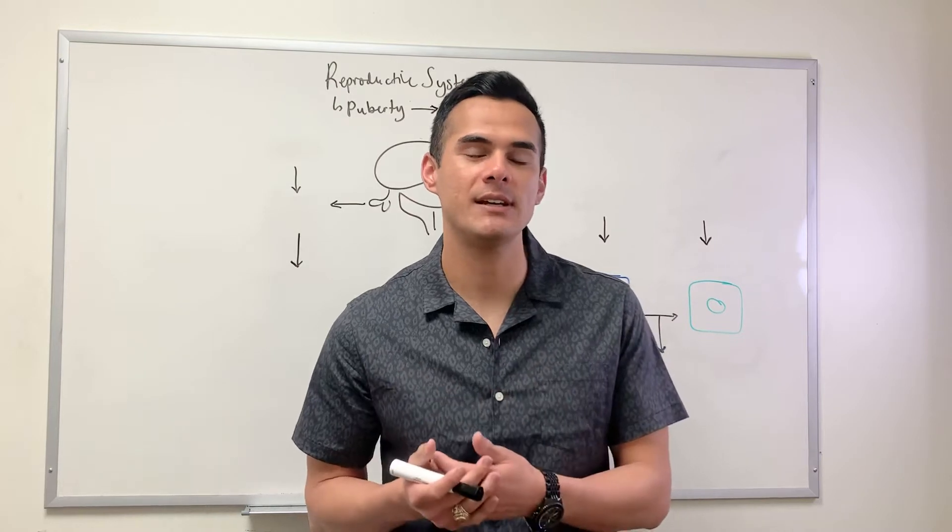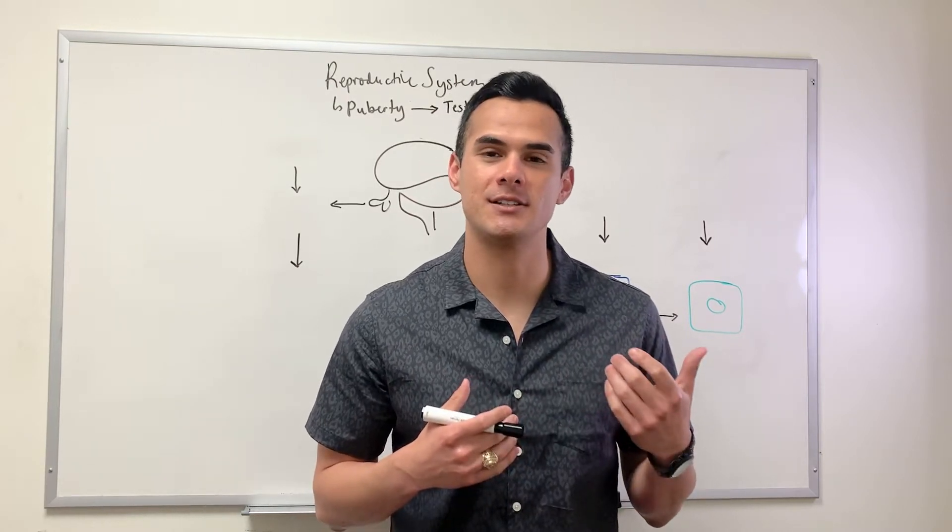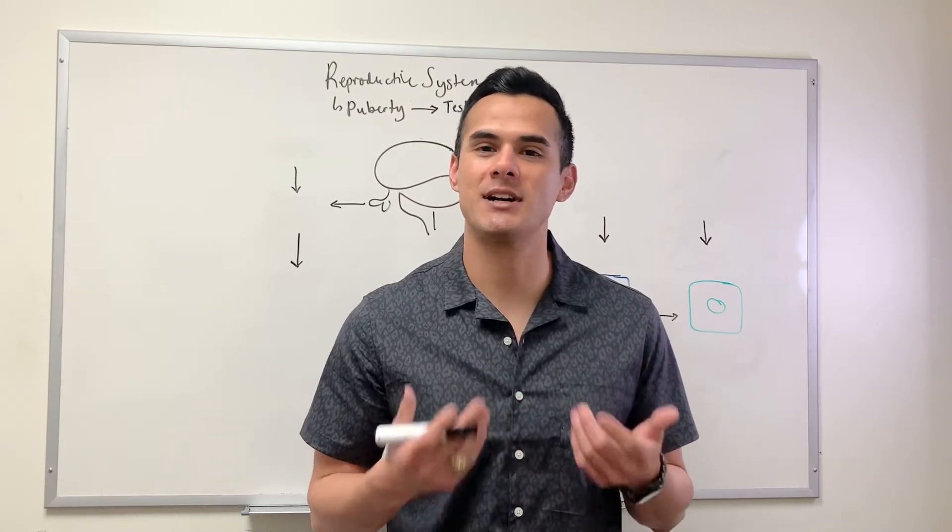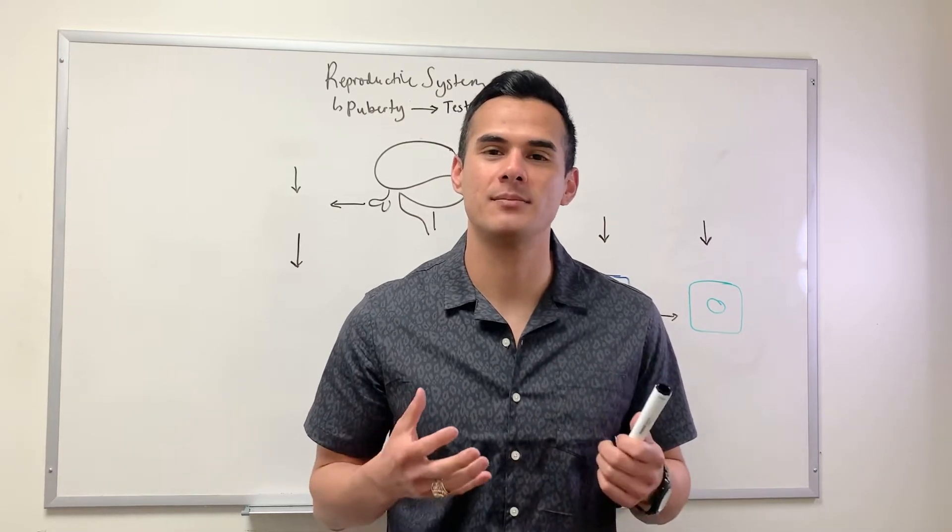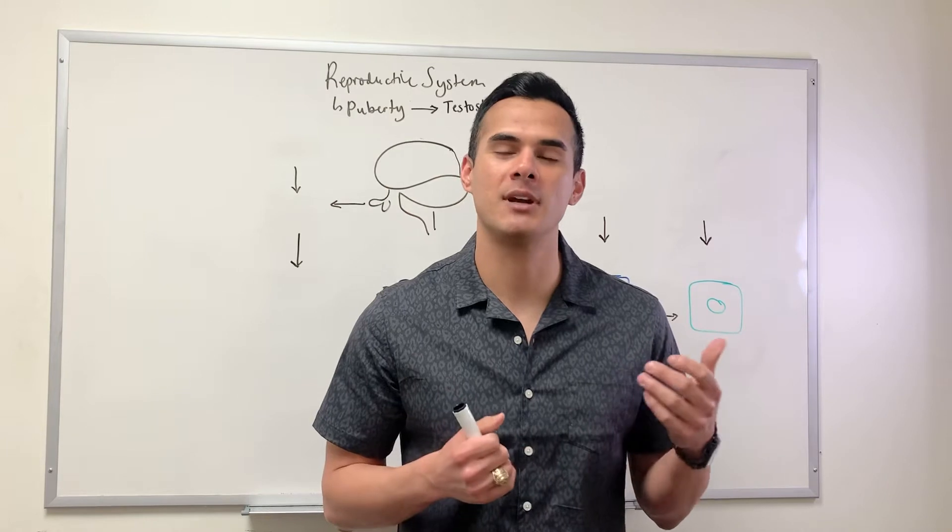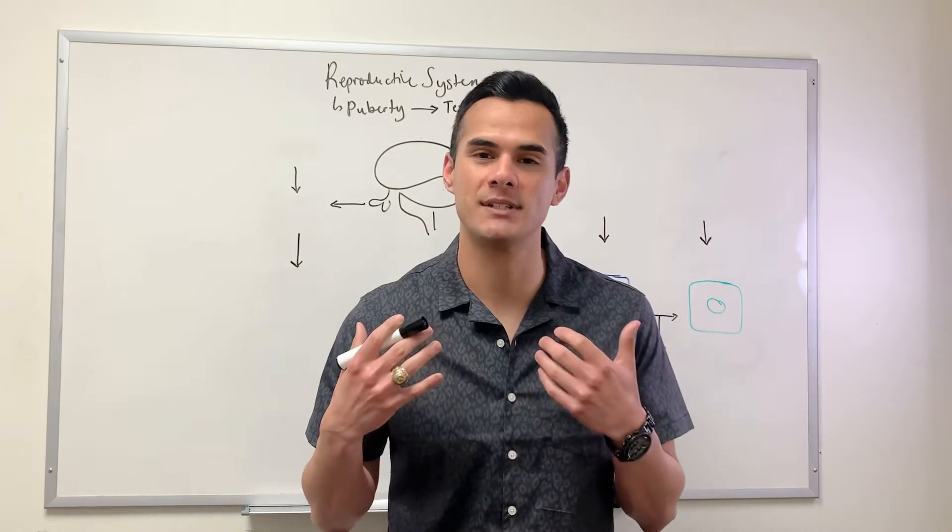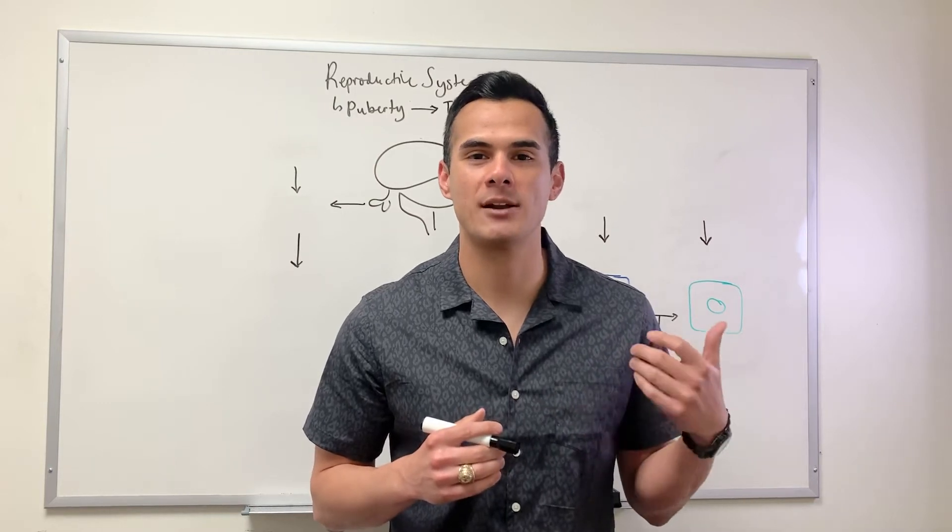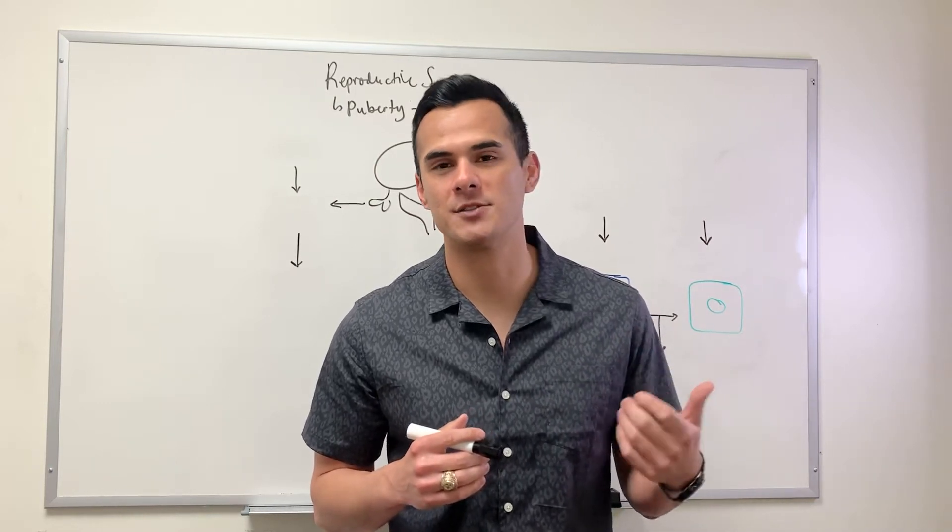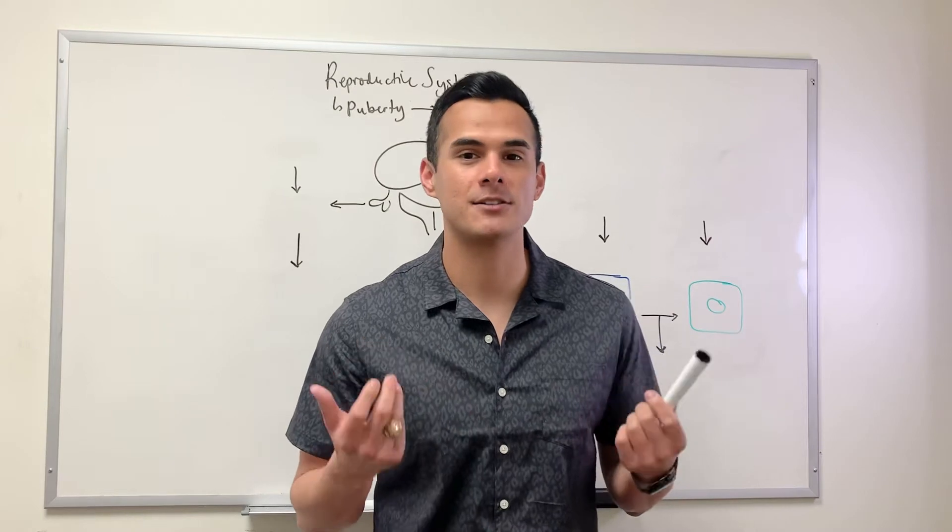When boys hit puberty they get a surge in testosterone. Testosterone has two main effects: boys are becoming men, developing masculine characteristics, and another process known as spermatogenesis - the production of sperm.